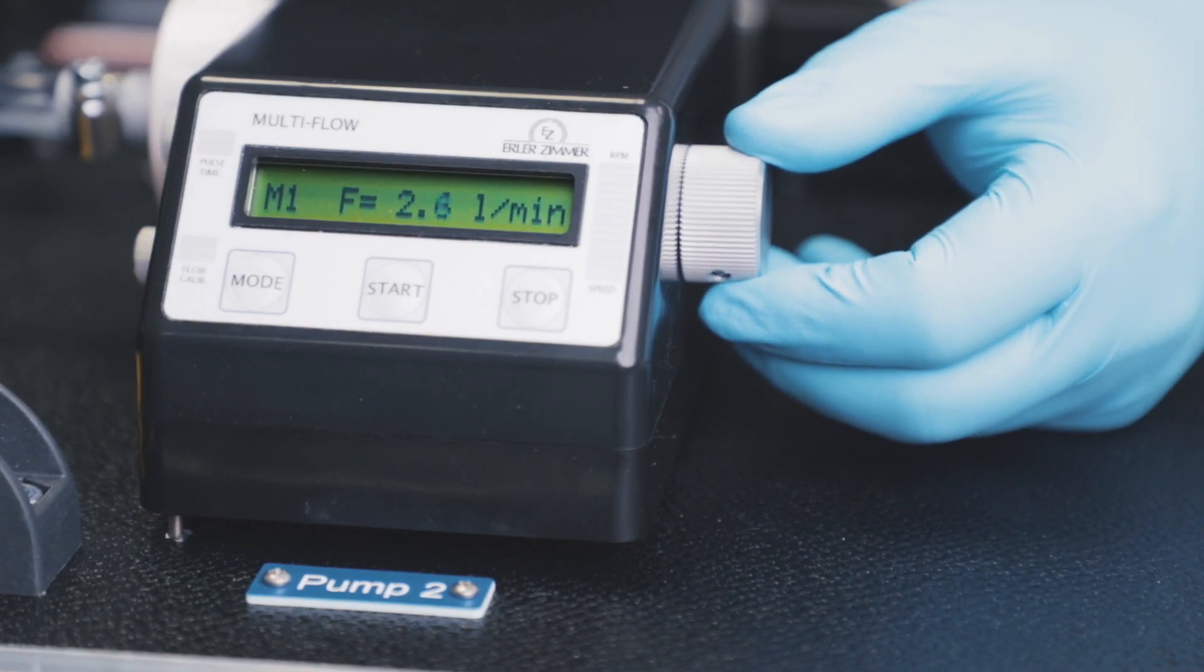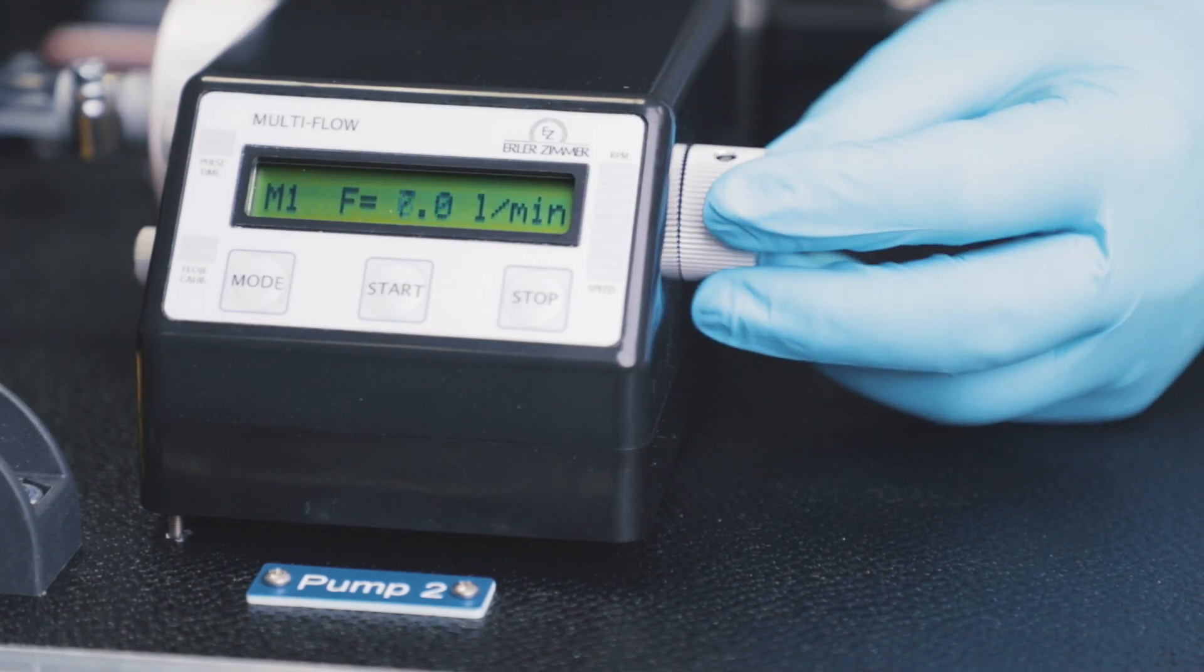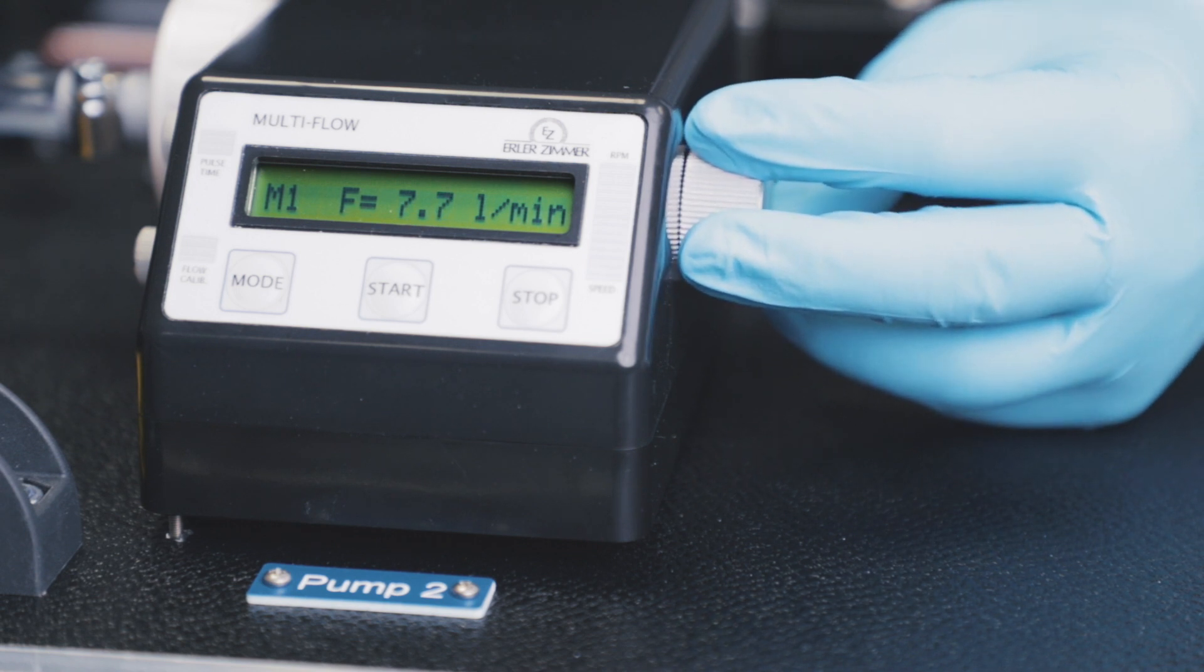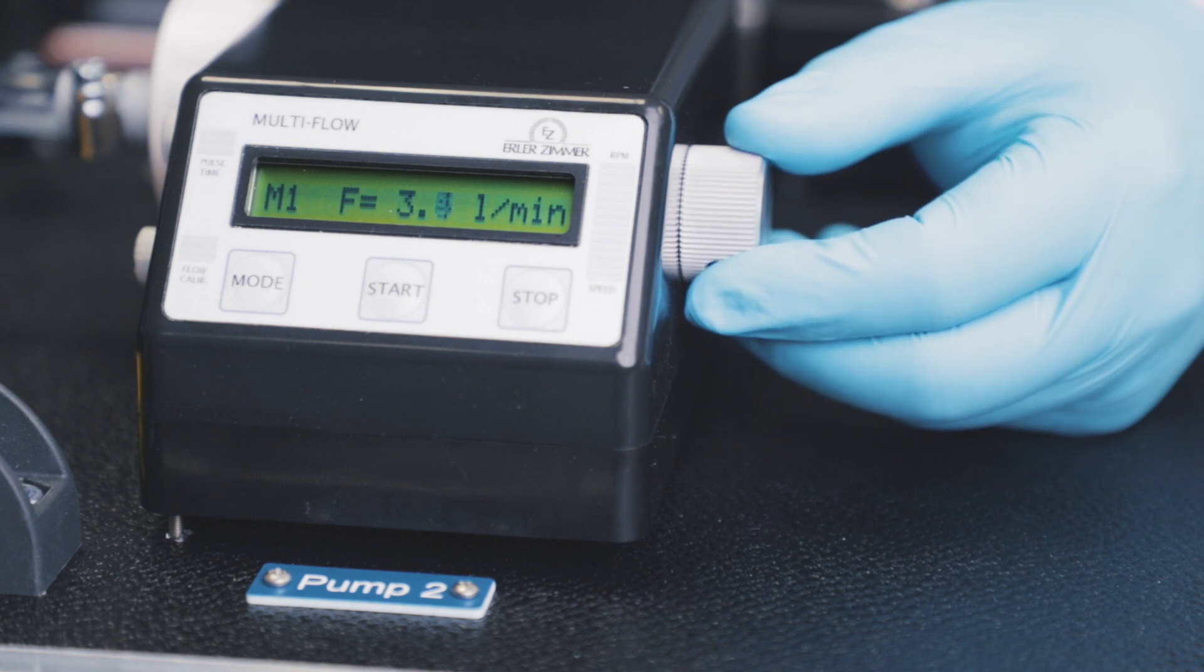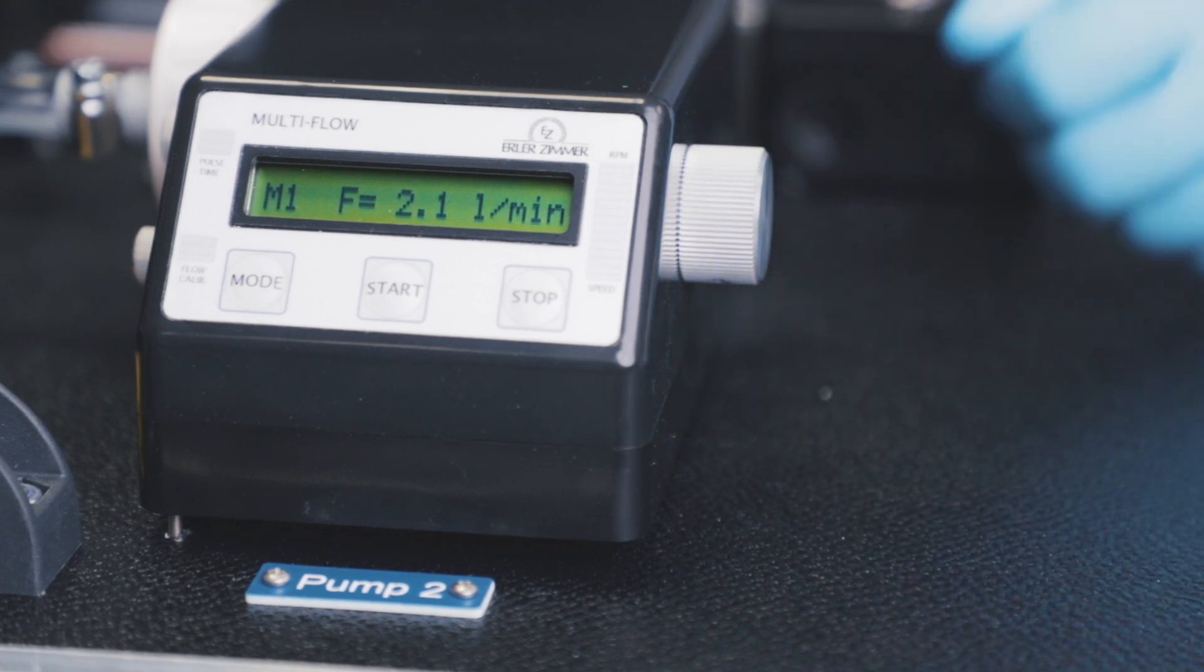The pumps have a big knob to adjust the volume of blood that is pumped. The display of the Venus pump can be adjusted. This pump is operated in mode one, showing the blood volume in liters per minute.